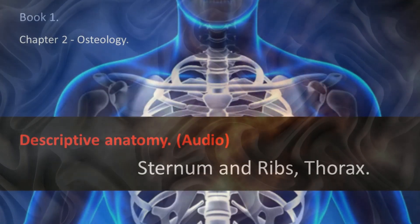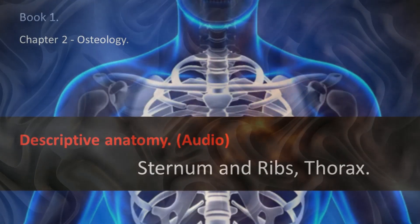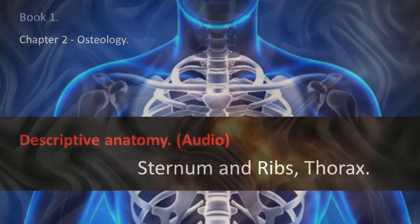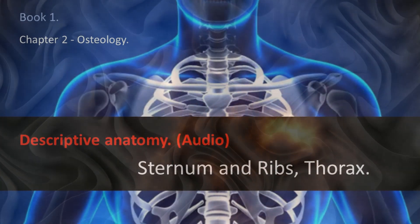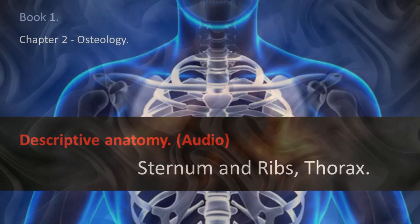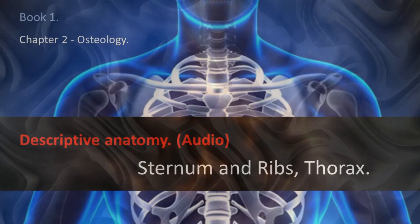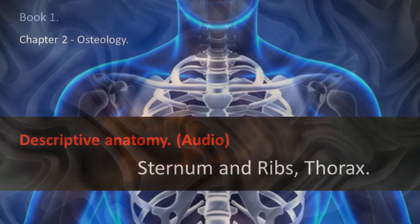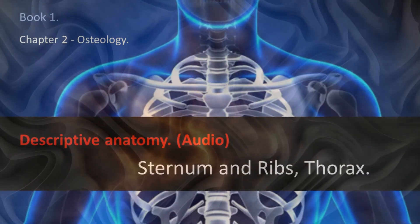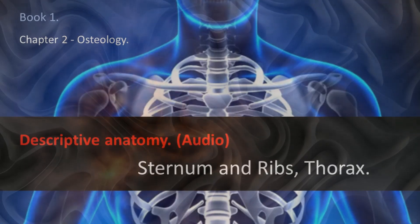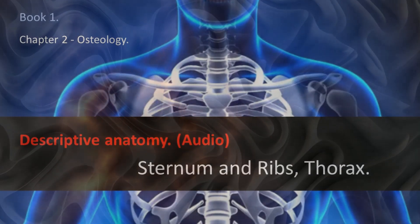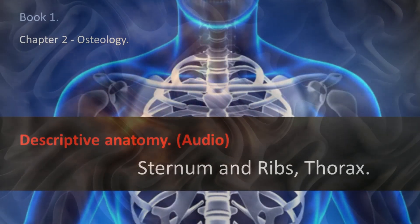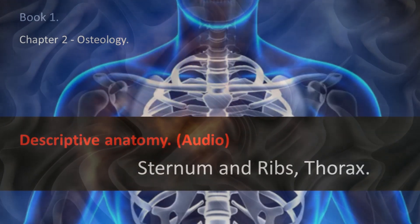Chapter 2: Sternum and Ribs, Thorax. The dorsal vertebrae are extended laterally by bony arches called ribs, which are implanted in front of the lateral parts of a second bony column, the sternum. The ribs and the sternum, in concert with the dorsal vertebrae, constitute the thorax.